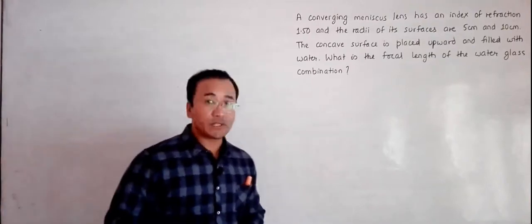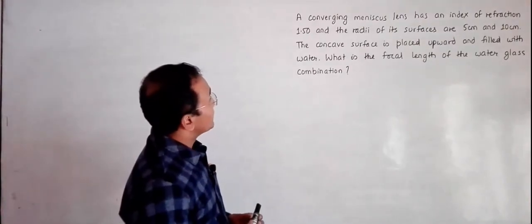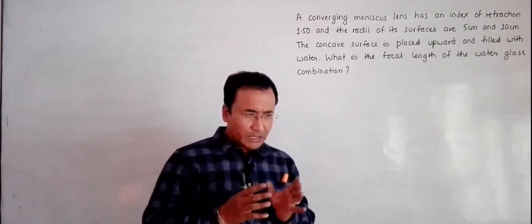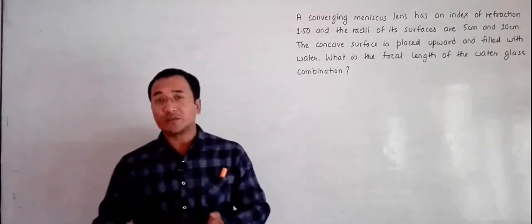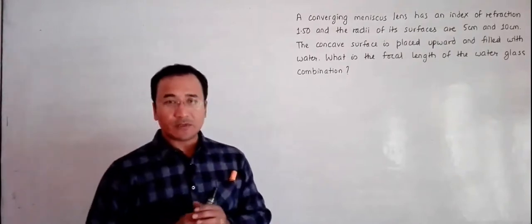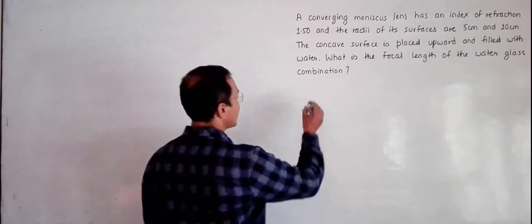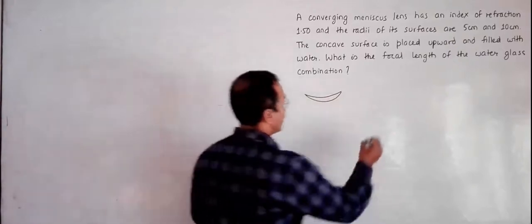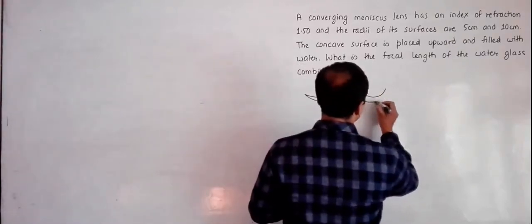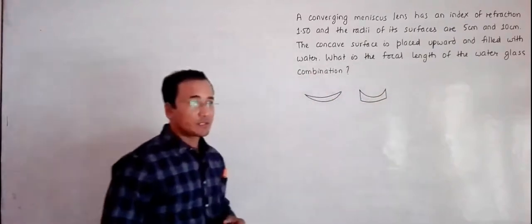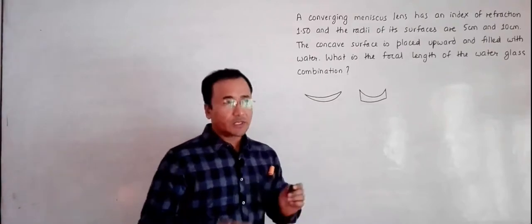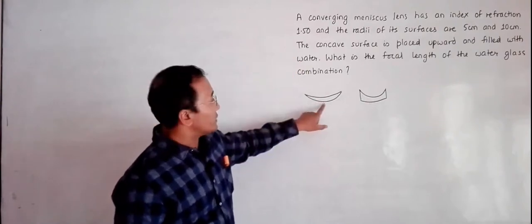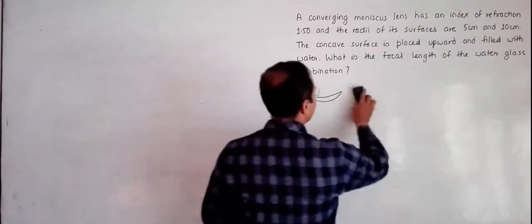Hello, today is again April 4, 2018. The question for today is about a converging meniscus lens. A meniscus lens is one which we often call a convexo-concave or concave-convex lens. The curvatures of the two surfaces are not the same. It can work as a convex lens or as a concave lens, but in this question the meniscus lens is a converging one, so we focus on that type.